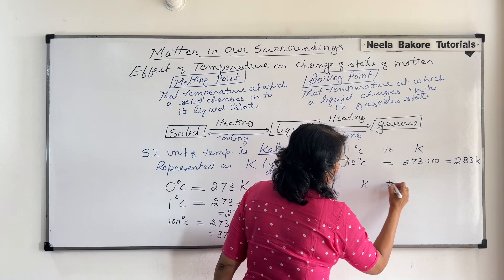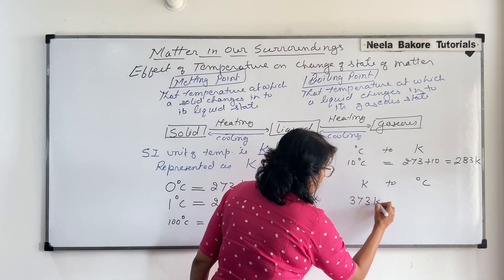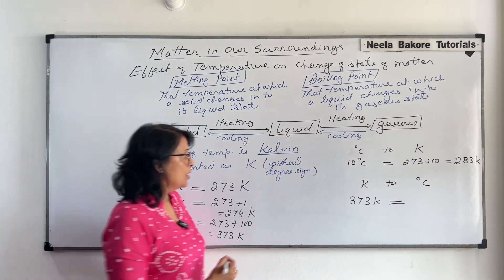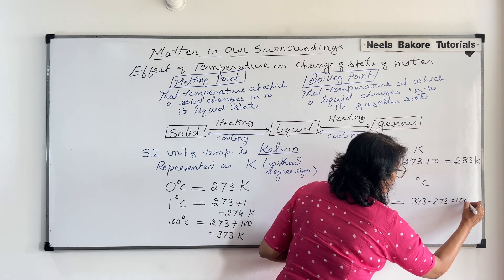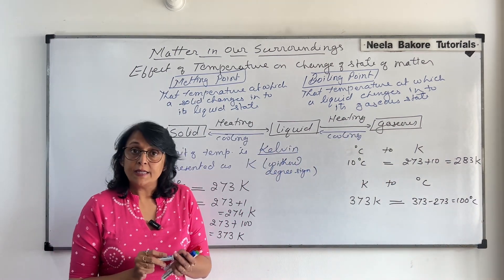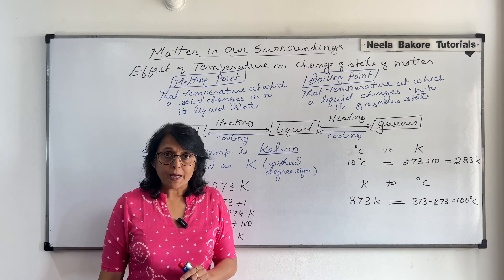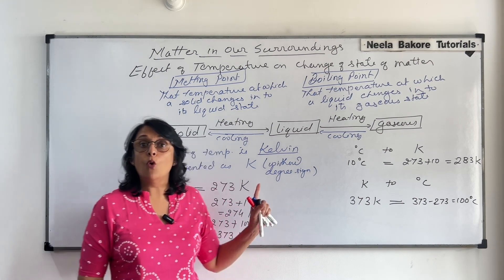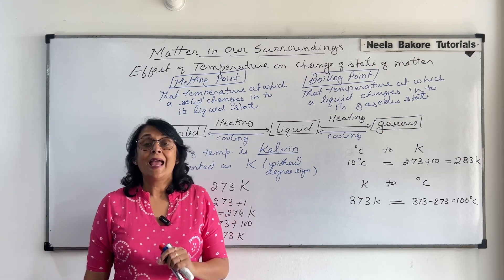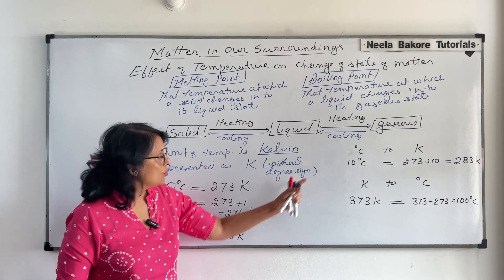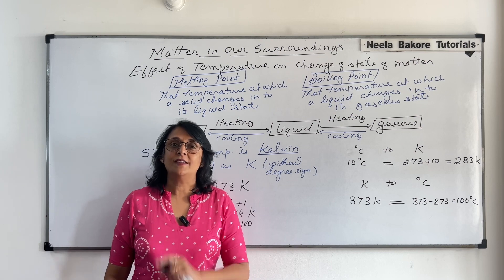To convert Kelvin to degrees Celsius: suppose the temperature is 373 Kelvin and we have to convert it into degrees Celsius — 373 minus 273 equals 100 degrees Celsius. You can practice these questions from the worksheet on our website. The link is in the description of this video where you will also find the notes for this chapter. You can download and print the worksheets and practice them as many times as you can, so that when such questions are asked in the exam, you will be able to answer them correctly.